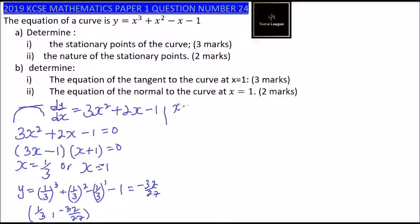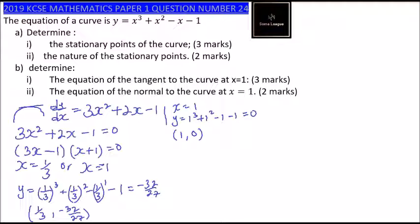When x equals 1: y equals 1 cubed plus 1 squared minus 1 minus 1, which gives 0. So the other turning point is x equals 1 and y equals 0. Those are the two turning points.